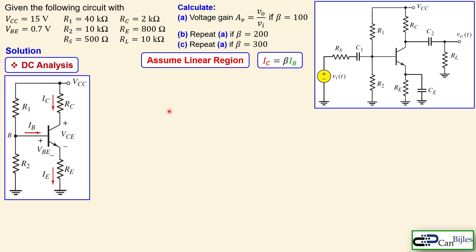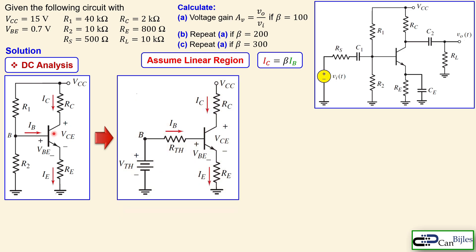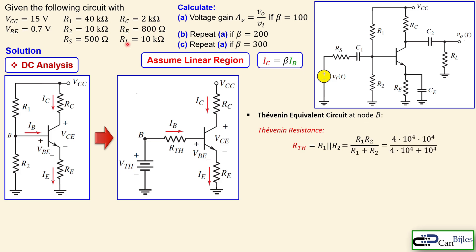We start with DC analysis. For DC analysis we assume all capacitors are perfectly open, so the input source is disconnected and the load is gone. We have the circuit in DC quantities with capital letters. We first transform the bias network to a Thevenin equivalent circuit, which gives us the Thevenin voltage and Thevenin resistance. The Thevenin resistance is the parallel combination of R1 and R2 looking back from the base, giving 8 kilohms. The Thevenin voltage is the voltage division R2 over R1 plus R2 times VCC, which gives 3 volts.